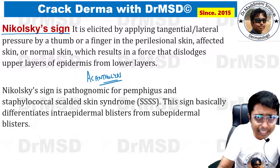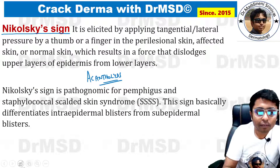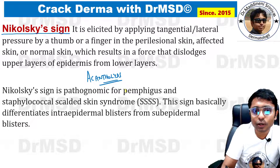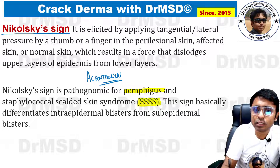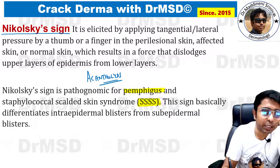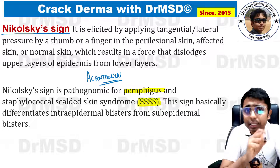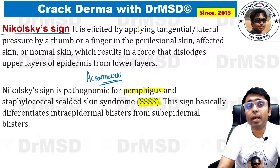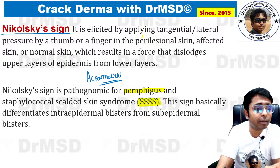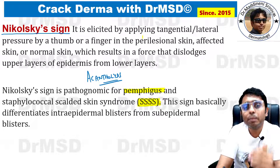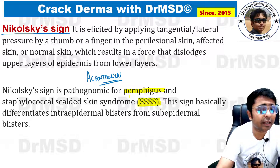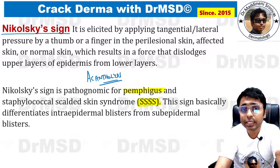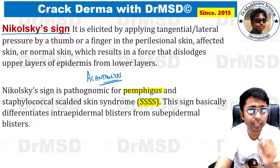The resultant cells are called acantholytic cells, also called Tzanck cells, which are nothing but keratinocytes. This is classically seen in intra-epidermal blistering disorders, and the most important example you must remember is Pemphigus. It can also be seen in staphylococcal scalded skin syndrome. The key point: Nikolsky sign helps us differentiate intra-epidermal from sub-epidermal blistering disorders — Nikolsky sign is positive in intra-epidermal blistering disorders.